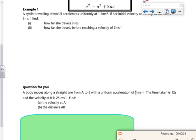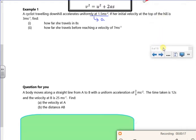Hi, this is a second video for the first lesson. It says a cyclist travelling downhill accelerates uniformly at 1.5 metres per second squared, so that's A. If her initial velocity at the top of the hill is 3, so U is 3, find how far she travels in 8 seconds.